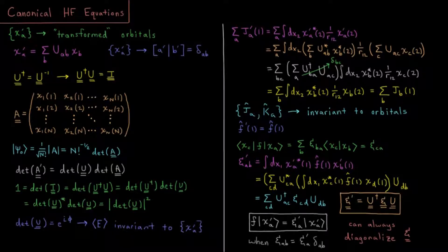This video will carry on our results for the minimum determinant energy of a set of Hartree-Fock spin orbitals into a more convenient form, which we will ultimately call the canonical Hartree-Fock equations.